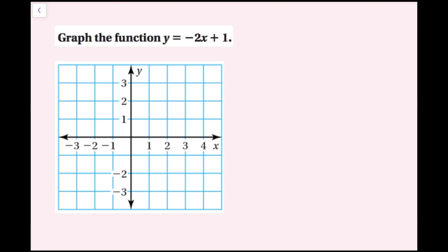For this example, we're going to graph y equals negative 2x plus 1. There are actually multiple ways to do this. This equation is in the form y equals mx plus b, which is slope-intercept form. You could graph this using the slope, which is m equals negative 2 — you could write negative 2 over 1. And then your y-intercept is going to be 1, which corresponds to the ordered pair (0, 1). You could plot that ordered pair and then go down 2 and right 1, or up 2 and left 1, fitting as many points on the graph as needed.